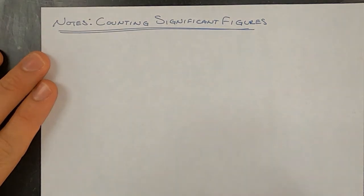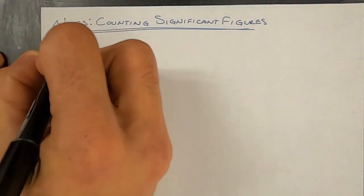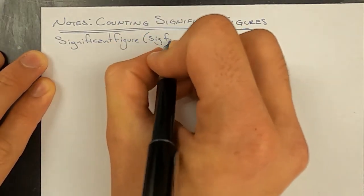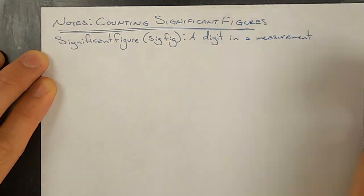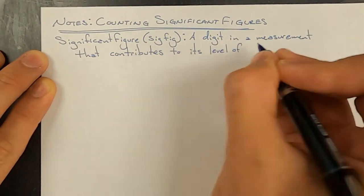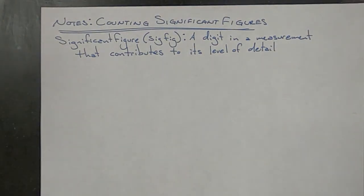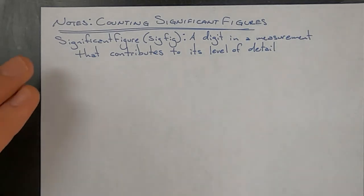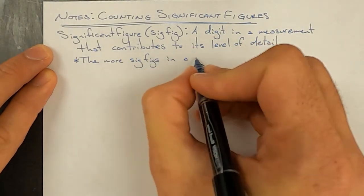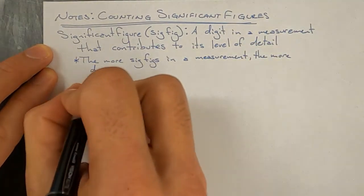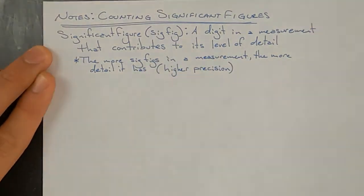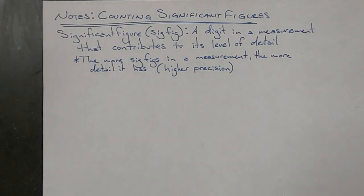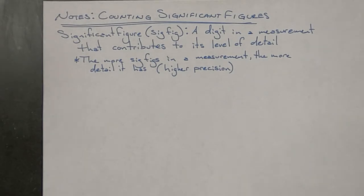A significant figure is a digit in a number that is providing some level of detail to that measurement. The more significant figures or significant digits are in a measurement, the more detail it has — it is more precise. The general rule is that all known and estimated digits are significant in a measurement.